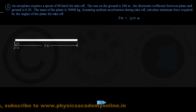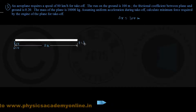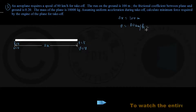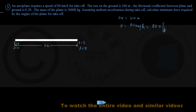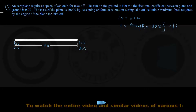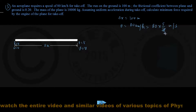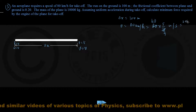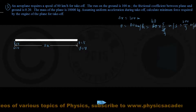The plane takes off from the far end, where time is t and velocity is v. They have given that during takeoff the speed must be 80 kilometers per hour. Converting into the standard SI unit of meters per second: 80 multiplied by 5 over 18, which comes out to be 200 over 9 meters per second. It is important to convert the takeoff speed into SI units.